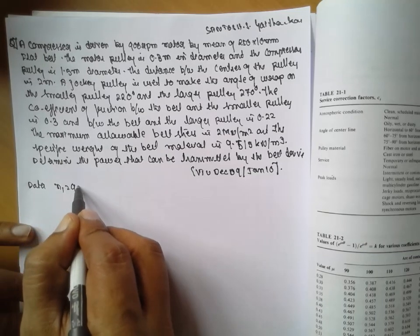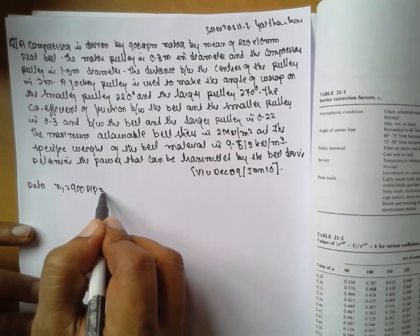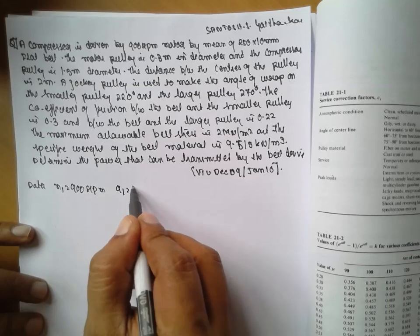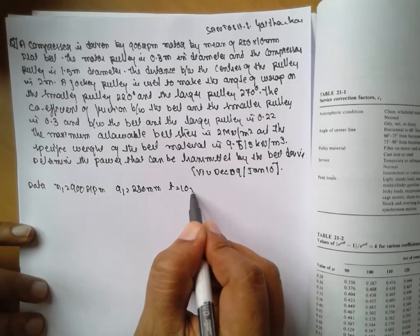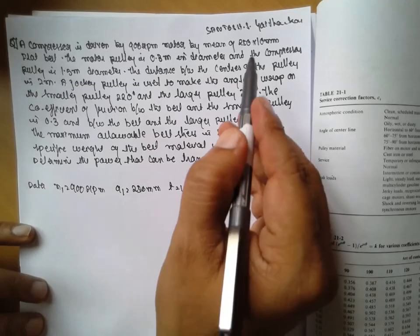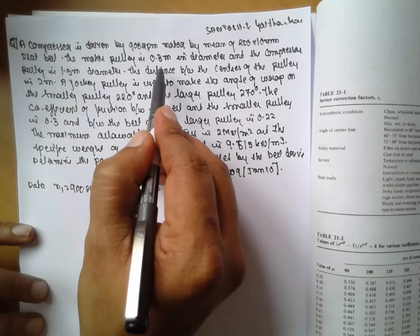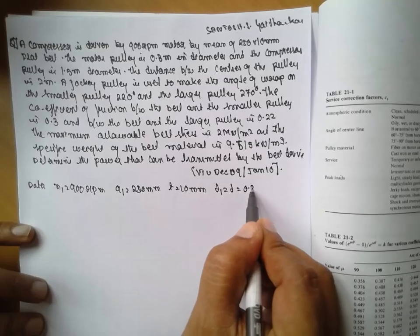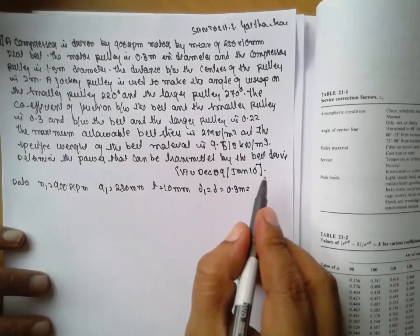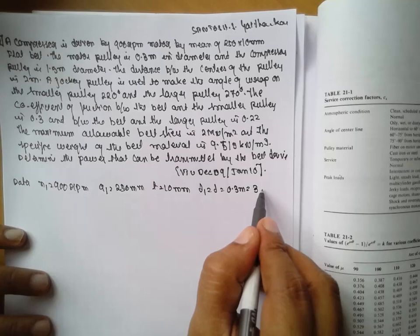Data: n1 equals 900 rpm, a1 equals 250 mm, and t equals 10 mm. The motor pulley diameter is given as D equals 0.3 meters. You have to convert into mm, so 300 mm.